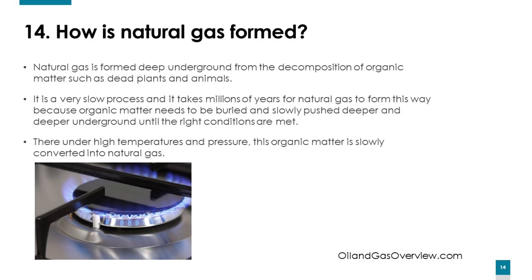Explain how natural gas is formed. Natural gas forms deep underground from the decomposition of organic matter such as dead plants and animals. It's a very slow process that takes millions of years, as organic matter needs to be buried and slowly pushed deeper underground until the right conditions are met. There, under high temperatures and pressure, this organic matter is slowly converted into natural gas.